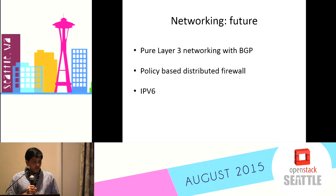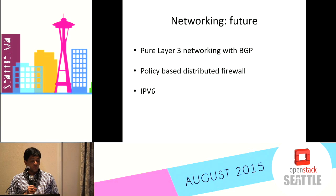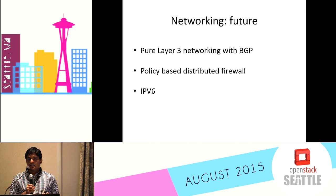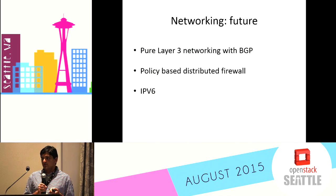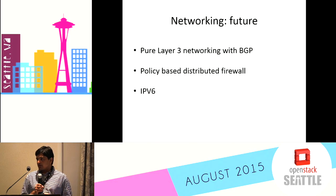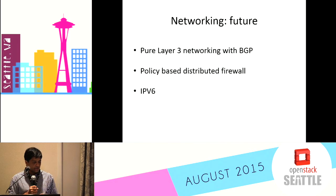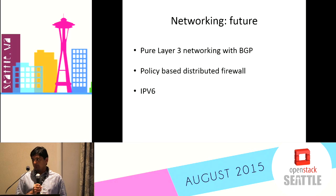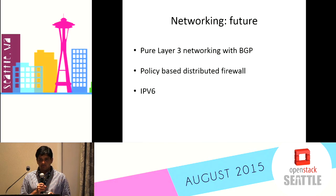For the future of networking on our side, we want to consider moving to a pure Layer 3 networking with BGP support. We are also working on a policy-based distributed firewall — instead of having network-defined isolation boundaries, we are implementing something of our own, leveraging IP tables or other mechanisms to isolate traffic on a pure Layer 3 routed fabric. IP space exhaustion is another thing we are dealing with, so we are actively looking at IPv6 as a potential option. Since Docker now supports IPv6, that's a good thing.